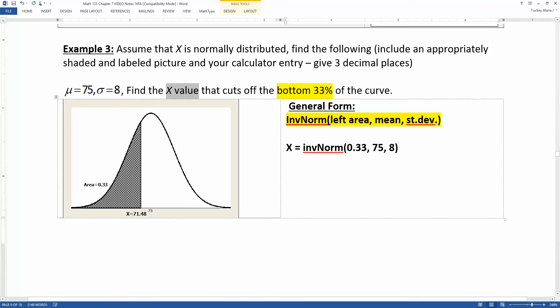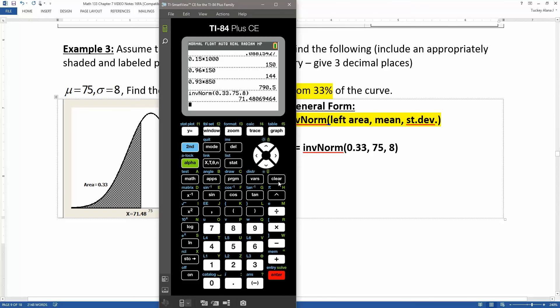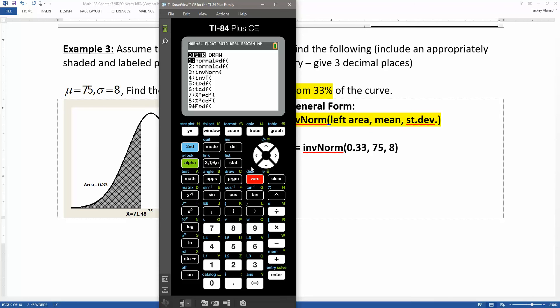Now let's go grab a calculator and type that in. You can see I already did, but I'll do it again. Second distribution, which is above your variables button, you hit number three to get inverse norm. 0.33 is the area. It's always left tail area. That's for reasons of calculus. We always take integrals from the left to the right. So it will always, always, always be the left tail area. Then the mu is 75 and the sigma is eight. We go down to paste and press enter, and then we want to run this. So we press enter again, and we get 71.481.